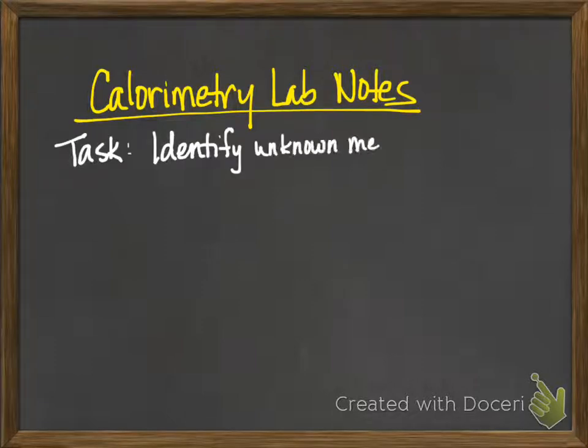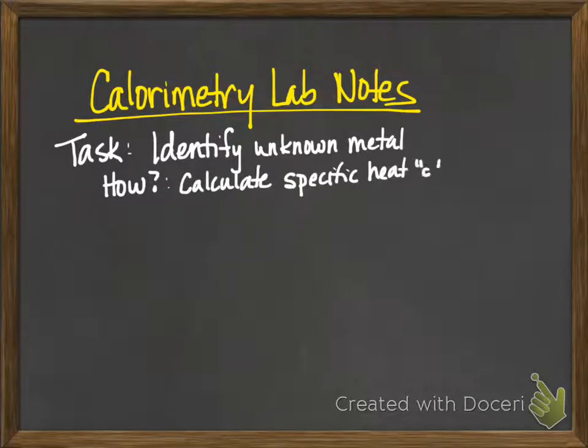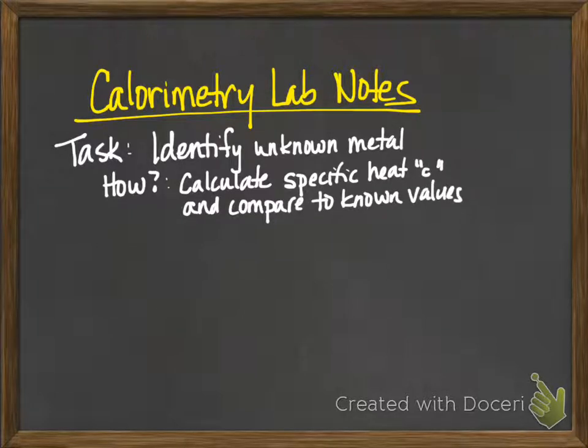First of all, your task is to identify some unknown metal, but you might be asking, how am I going to do that? The way we're going to do it is we're going to calculate the specific heat, or the C value, and then we're going to compare that C value to some known values.